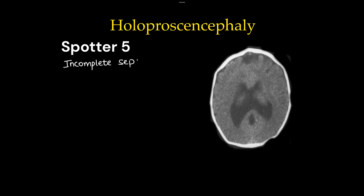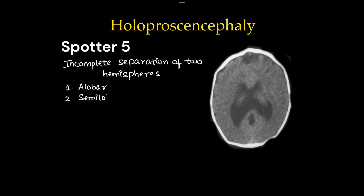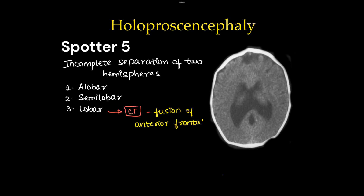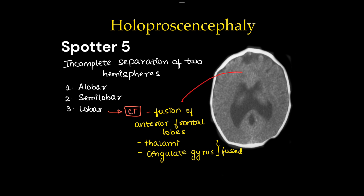Spotter 5 is a holoprosencephaly case. Holoprosencephaly means incomplete separation of both hemispheres — right and left. There are three types: alobar, semilobar, and lobar. This is the alobar type, where CT shows fusion of the anterior frontal lobes, and the thalami are fused. The cingulate gyrus may also be fused. The other types will not be discussed in detail.